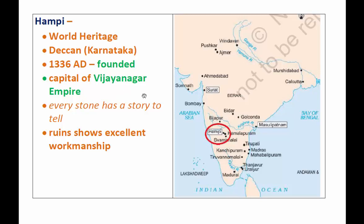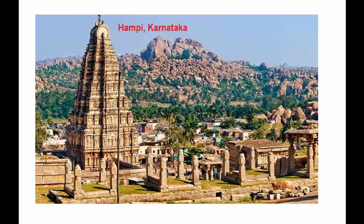Even today most people visit Hampi as a historical place. Tourists and visitors have expressed that every stone has a story to tell, meaning this place is very important. Hampi was eventually ruined, but the ruins show excellent workmanship. This picture shows Hampi — you can see the temple in Karnataka; it is a magnificent view.